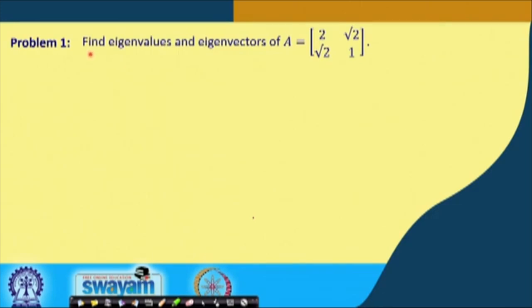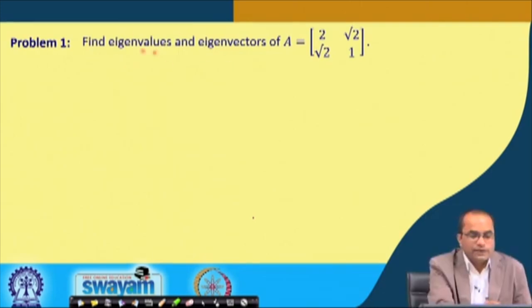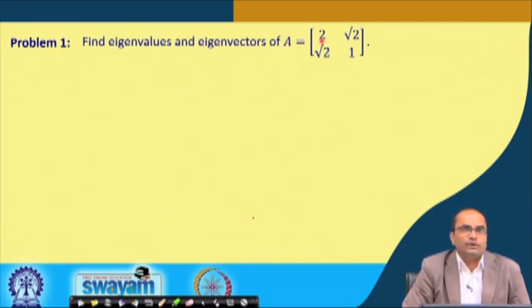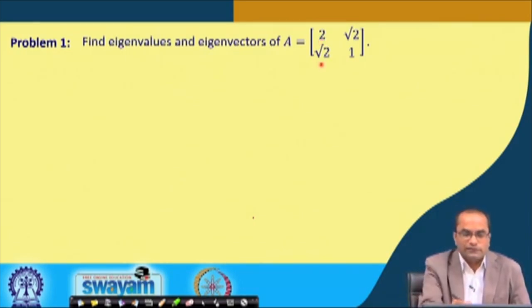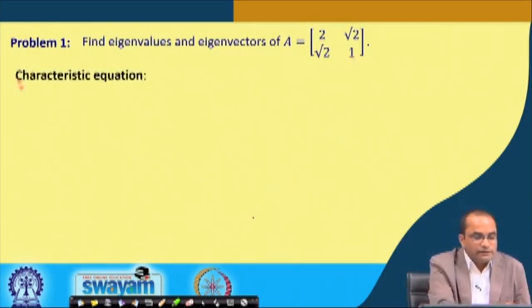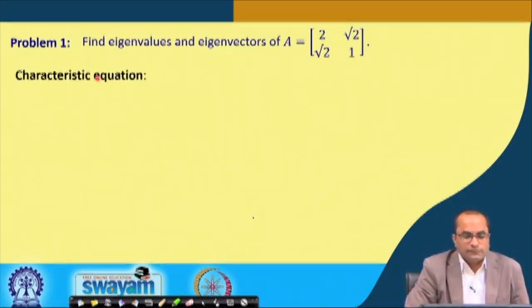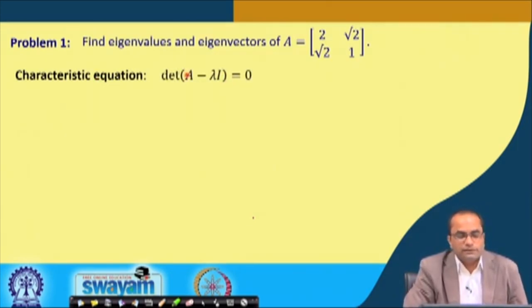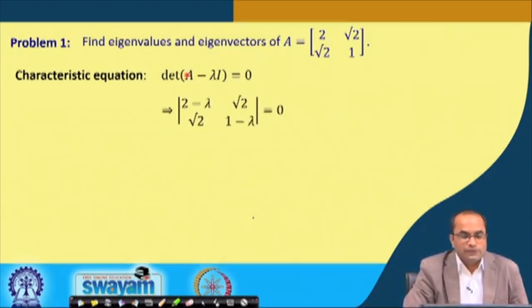Let us start with this problem: find eigenvalues and eigenvectors of this matrix. It is a simple 2x2 matrix with entries 2, square root of 2, square root of 2, and 1. The characteristic equation we have to write down as the first step is the determinant of A minus lambda I equals zero.